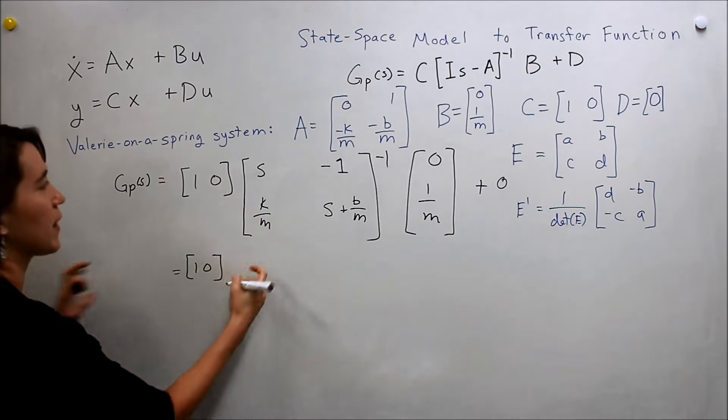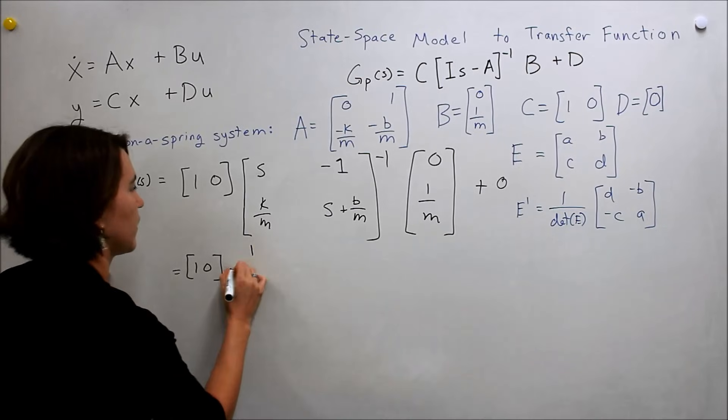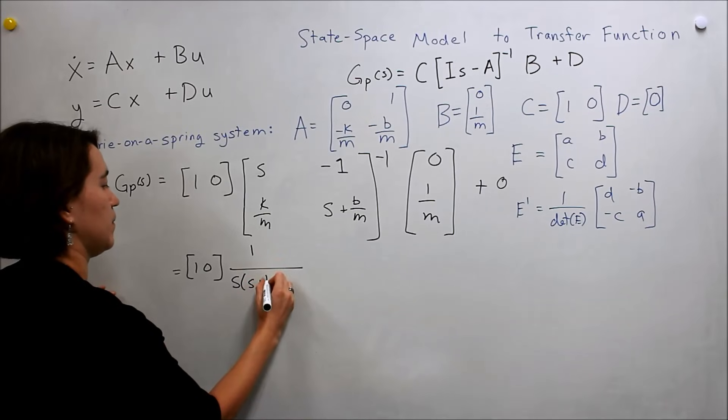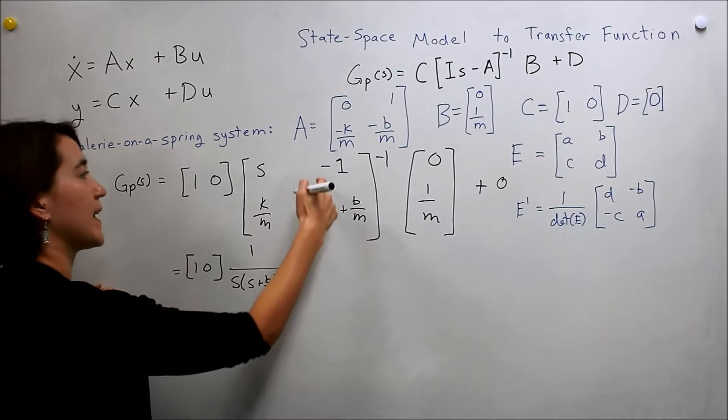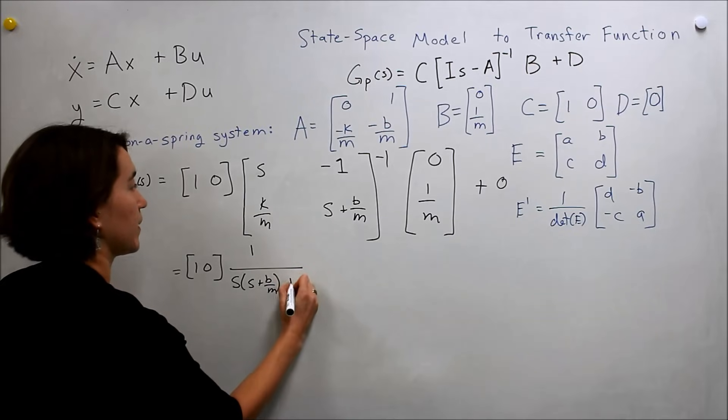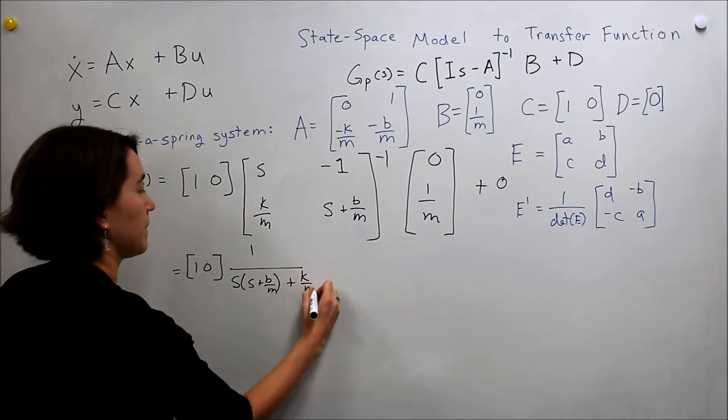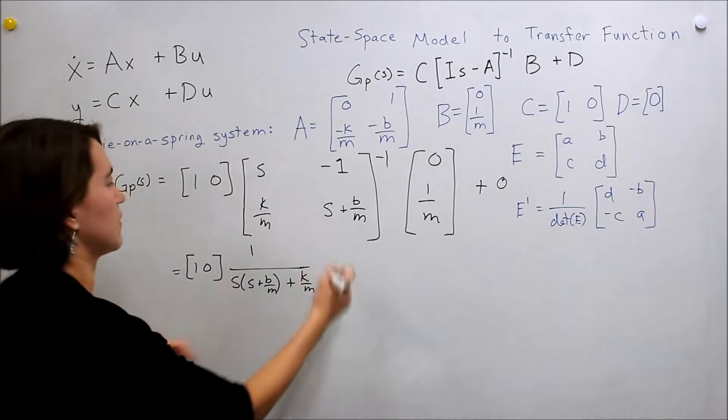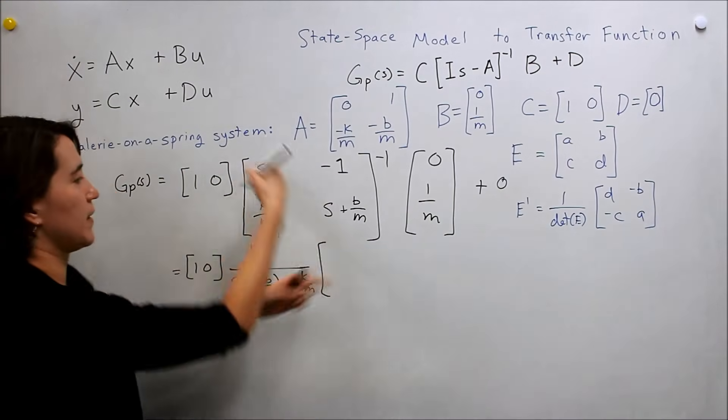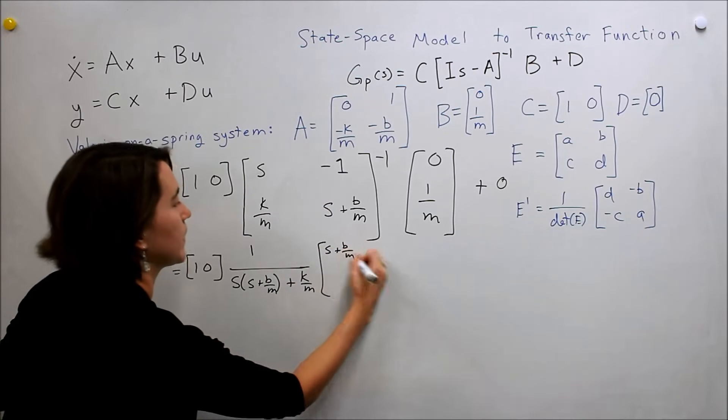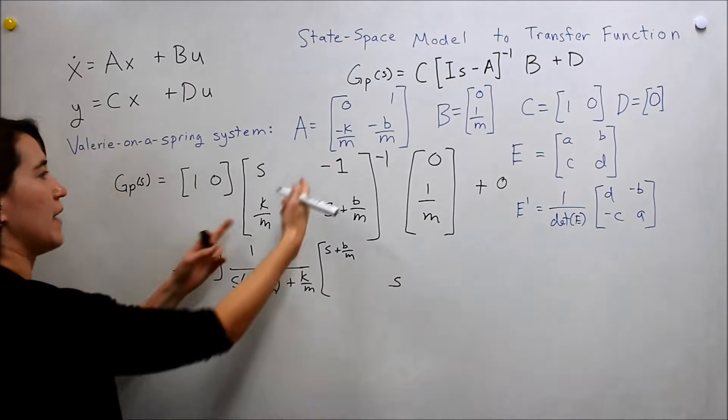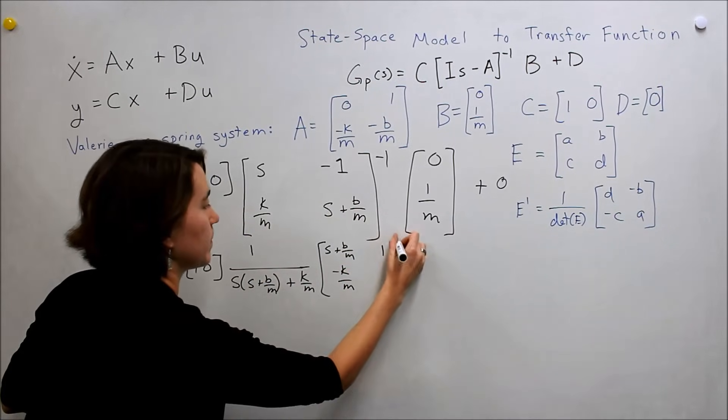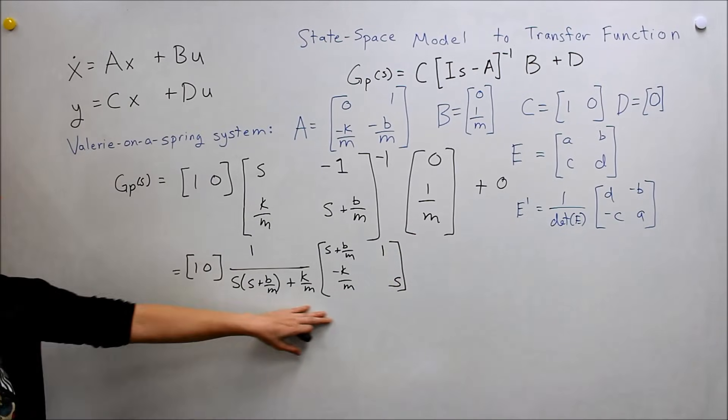So, we'll keep everything in its form. So here you still have zero, one. Now we're taking the determinant of this, so one over that. And, so it would be s times s plus b over m. This times this, minus this times this. So it would be a plus k over m. So those are one over the determinant. Now we need to just flip these things around. So, swap these two. So we get s plus b over m here. And then s in the bottom right. And then take the negatives of these. So negative k over m, and then positive one. Okay. So there is our inverse.